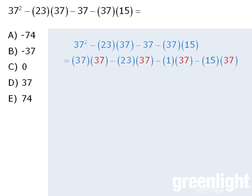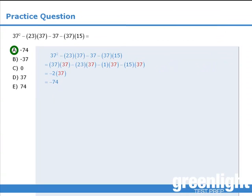And finally when we subtract 15 37s we get negative 2 37s. Now negative 2 times 37 equals negative 74, so our answer here is A.